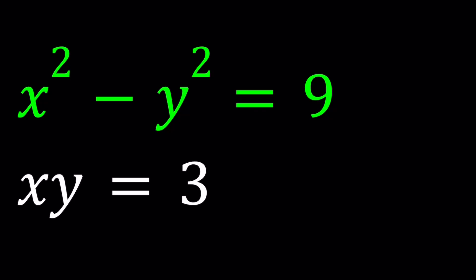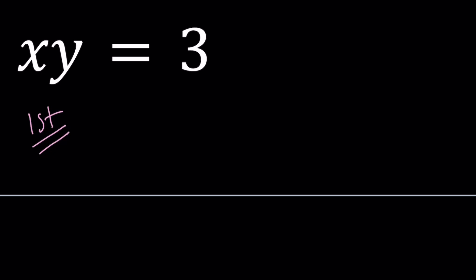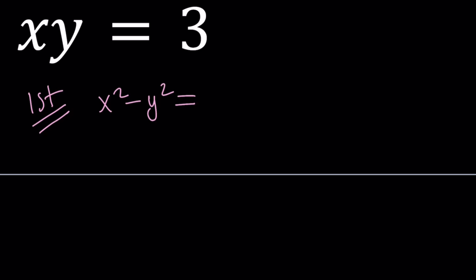Let me show you what it looks like. My first solution looks like this. Since x squared minus y squared is a difference of two squares, I can write it as x plus y times x minus y is equal to 9.